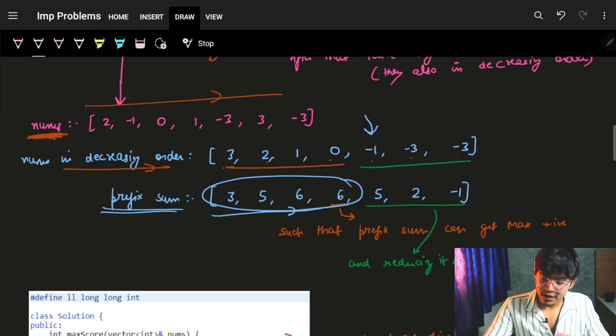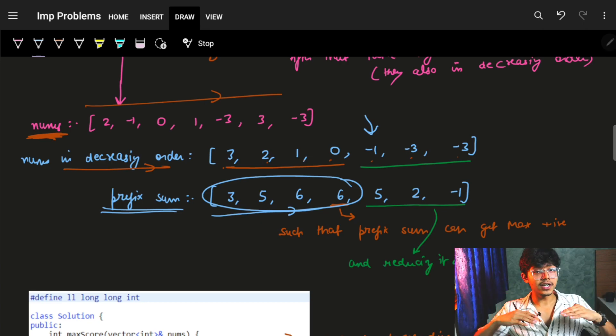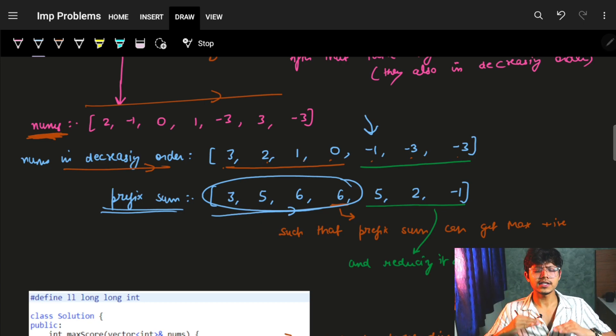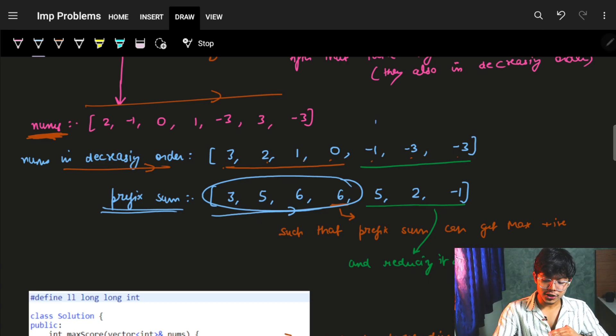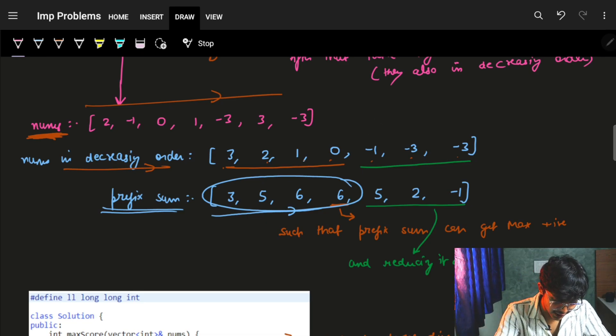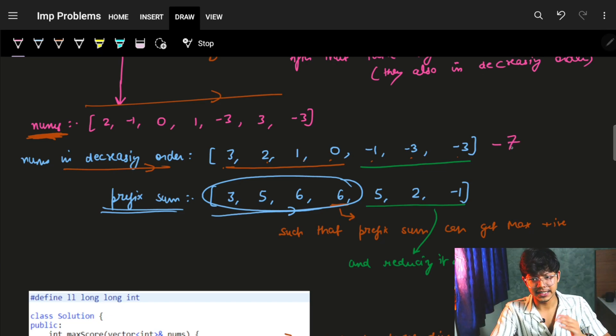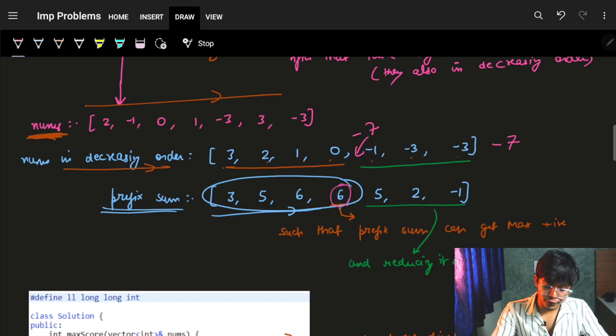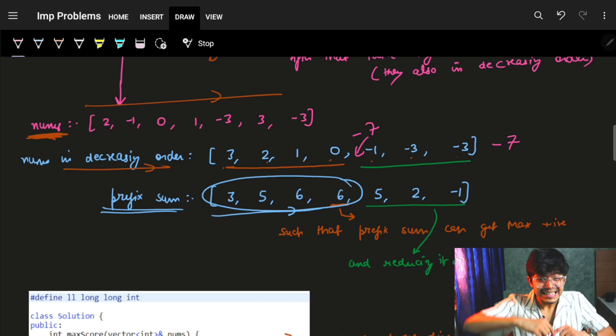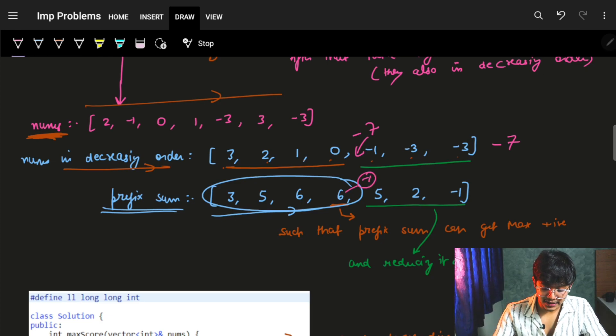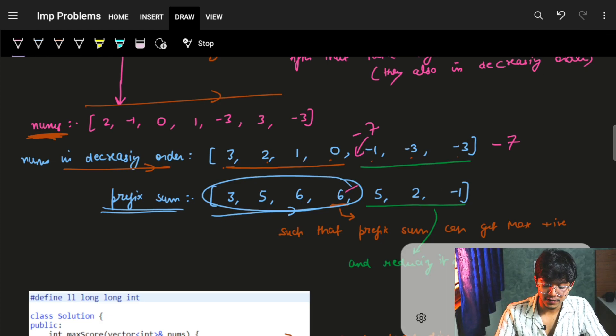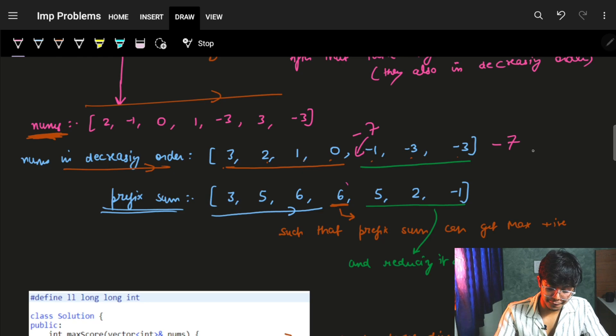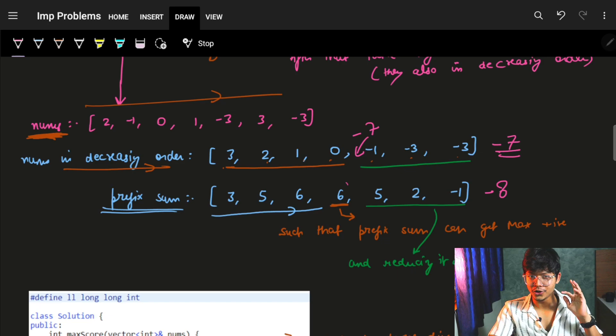Which means that my prefix sum will reduce slightly, very slowly, because the number ahead is small. If it would not have been—let's say if the number would have been minus 7 after this minus 3, and basically minus 7 would have occurred right here—this 6 would have instantly reduced to minus 1, and these 5 to minus 1 would not have come. But if we put it in the last, then it would have been minus 8 right here. So you got that?